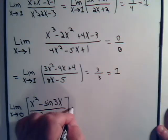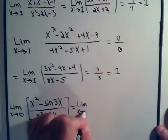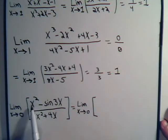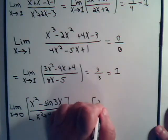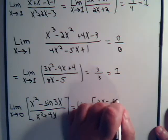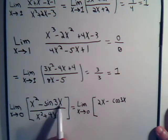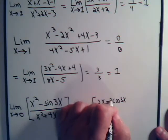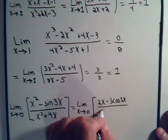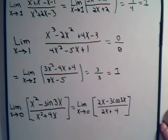So it doesn't get us very far. But this will equal the limit as x approaches 0 of 2x minus the cosine of 3x. Taking the derivative of this, and taking the derivative of what's inside, that will be 3. And then down here we will have 2x plus 4. Now we have x equals 0.